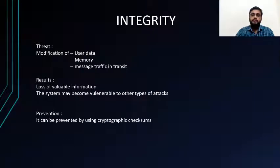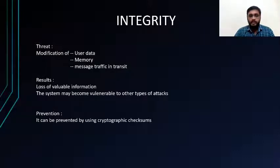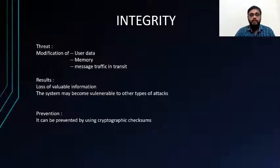The next element is Integrity. The threat here is modification of user data, memory, or message traffic in transit. The consequences include loss of valuable information and the system becoming vulnerable to other types of attacks. Continuing the earlier example, where person C has entered and spoofed the data of A and B — in an integrity attack, C can also change the data, leading to the risk of loss or alteration of information with different consequences. This can be prevented by using cryptographic checksums.